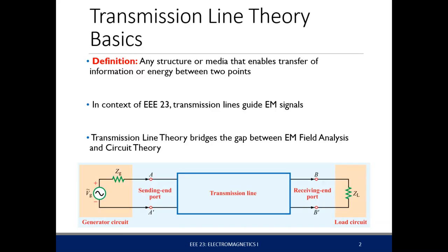What are transmission lines? Transmission lines are generally media used to transfer current — any structure or media that enables the transfer of information between two points. In terms of our circuits, that's the wires. In this context, transmission lines are waveguides.